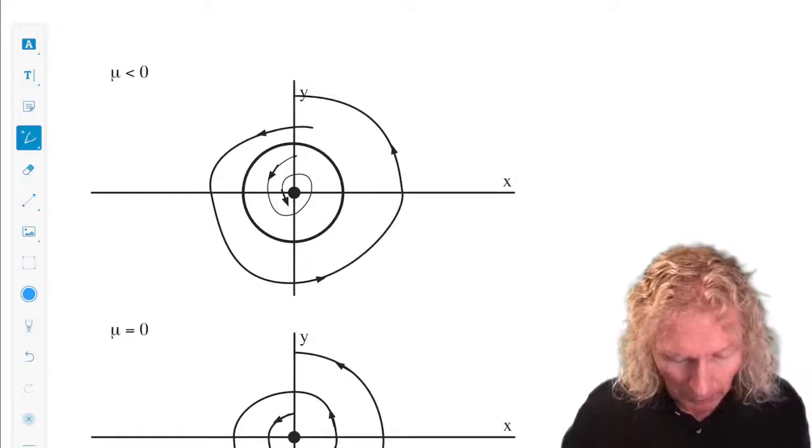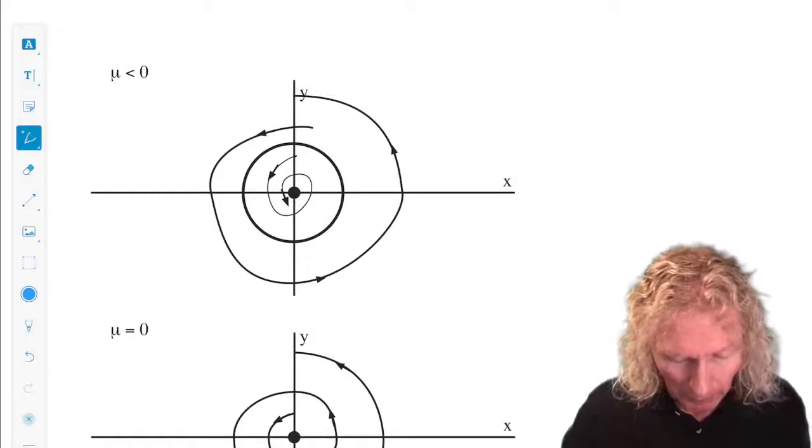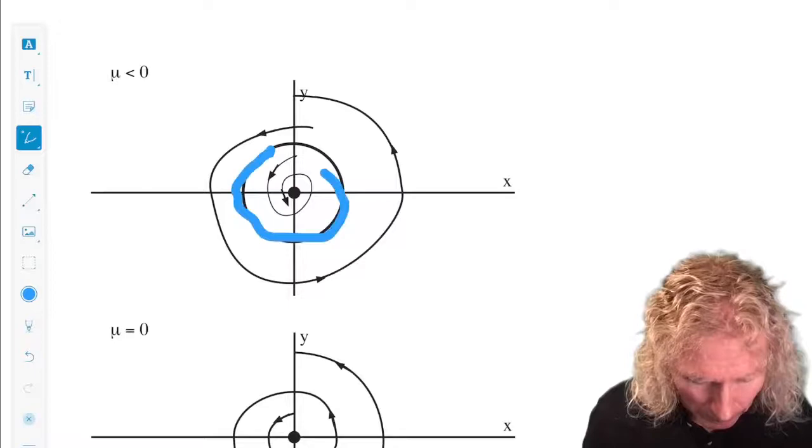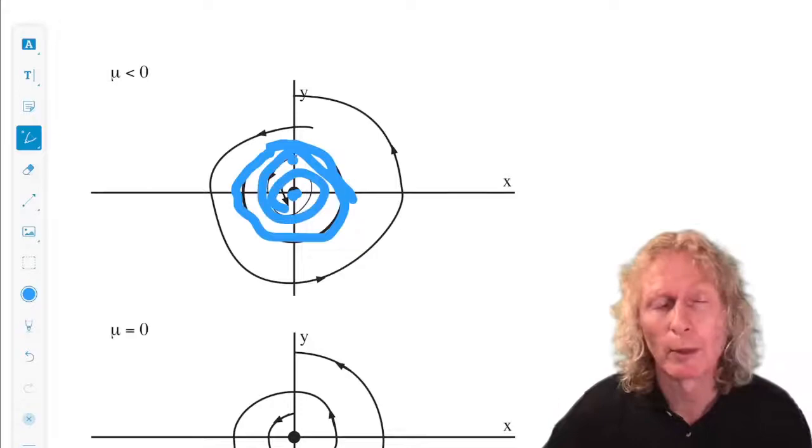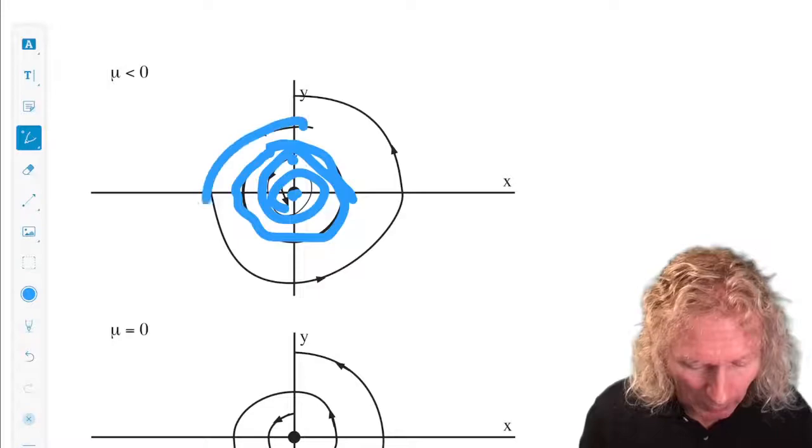So if we want to draw a picture of this, the dark circle here is our unstable periodic orbit trajectory and the origin is our sink. Trajectories spiral away from the periodic orbit into the origin, and when starting on the outside, they spiral around and go off to infinity for this simple equation.